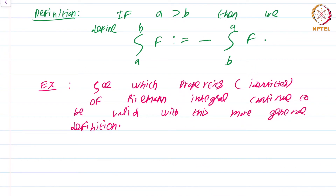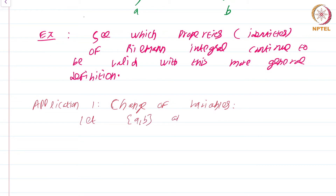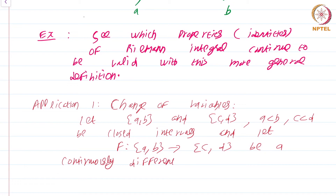With this definition out of the way, let us see some applications. Application one is also called the change of variables. This states the following: let [a,b] and [c,d] with a < b, c < d be closed intervals, and let φ from [a,b] to [c,d] be a continuously differentiable function. Recall this just means the function is differentiable and the derivative φ' is continuous.